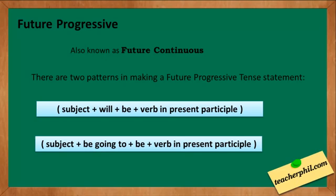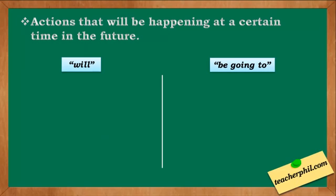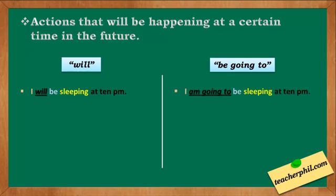There are different uses for the future progressive tense. The first use is for actions that will be happening at a certain time in the future. Examples: 'I will be sleeping at 10pm.' or 'I am going to be sleeping at 10pm.' In this sentence, the action 'I will be sleeping' will be happening at 10pm.